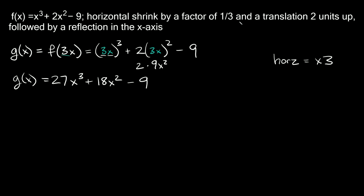The other transformation says a translation two units up. To translate or shift something up or down, it's pretty simple — you just add or subtract at the very end of your function. This says two units up, so we're going to add two to the end. We have minus nine, so we put a plus two right there. Negative nine plus two is equal to negative seven, so we can simplify that to just negative seven.